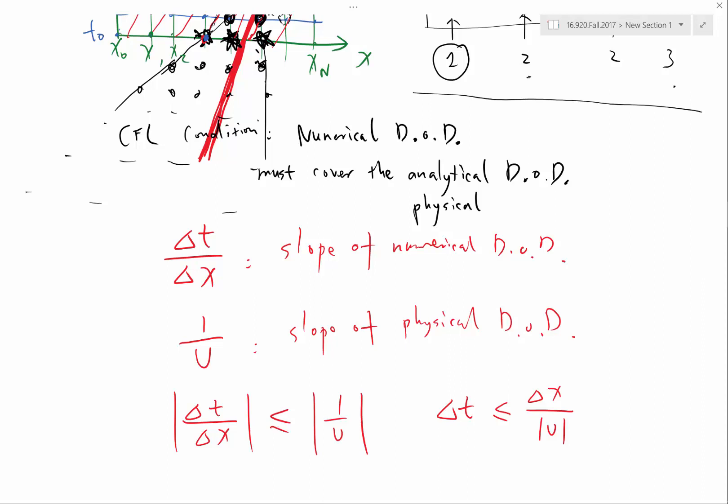Yes? Oh sorry, I just had a question about the CFL condition. Is it sort of the same as saying that your time step has to be small enough that the solution doesn't move more than one grid point every time step? Yes, the solution doesn't move over more than one grid point per time step. That's right, exactly. That's another very good way to say it.